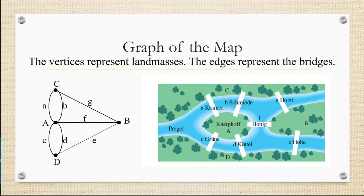Thinking of the city as a graph, where vertices represent land masses and edges represent bridges, we're really asking the question: does this graph have an Euler circuit? Can we begin and end at the same vertex, crossing each edge exactly once?